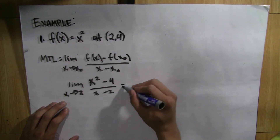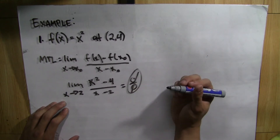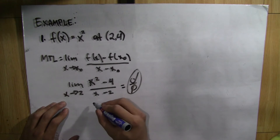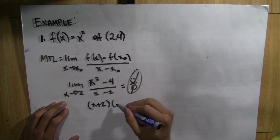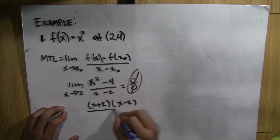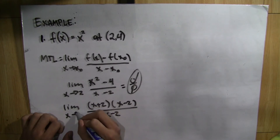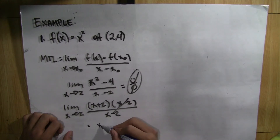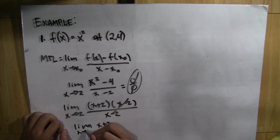Now, if we directly substitute 2 into the function, we get 0 over 0, which is indeterminate. So we manipulate the given rational function. X-squared minus 4 factors as (x plus 2)(x minus 2), all over x minus 2. Then we can cancel x minus 2, leaving us with the expression x plus 2. So the limit of x plus 2 as x approaches 2, wherein we can directly substitute 2, is 2 plus 2 equals 4.